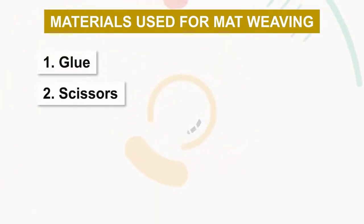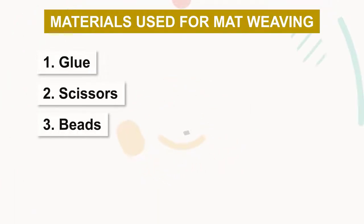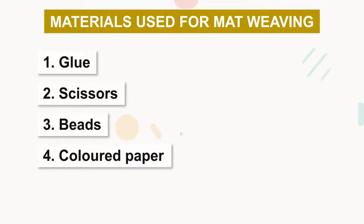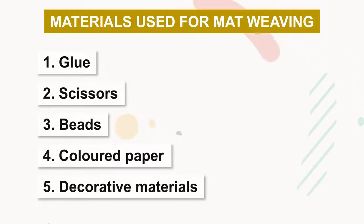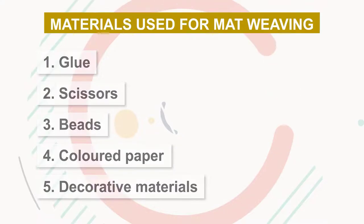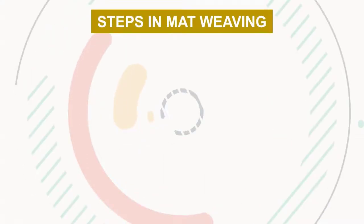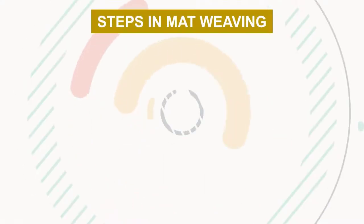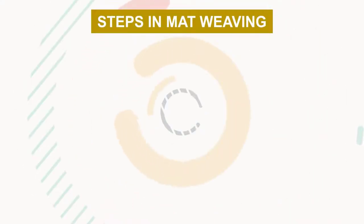Materials used for mat weaving: number one, glue; number two, scissors; number three, beads; number four, colored paper; number five, decorative materials.